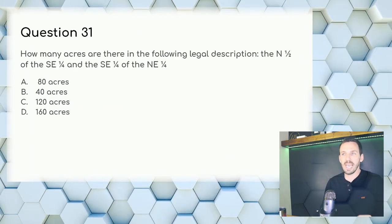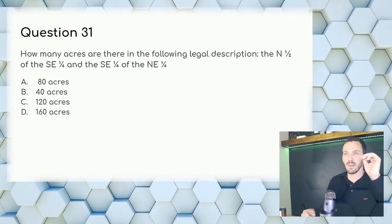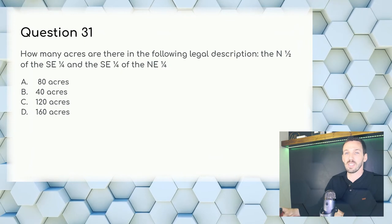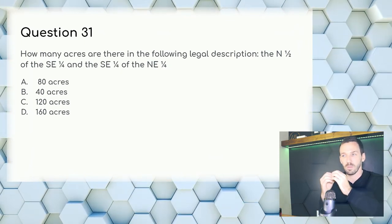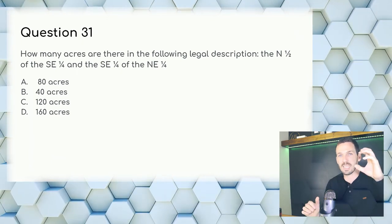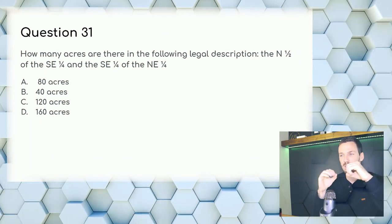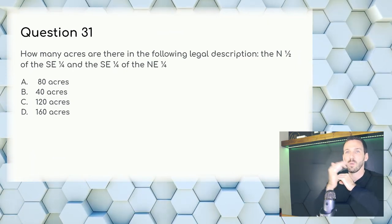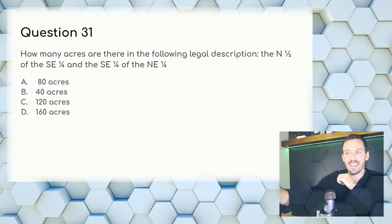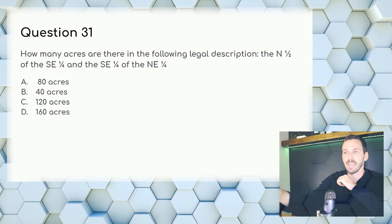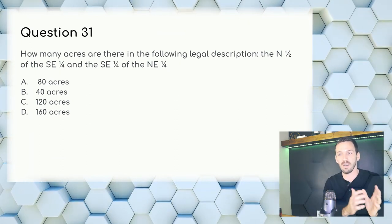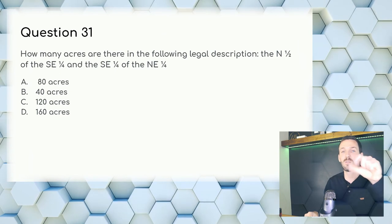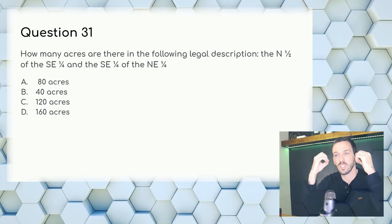Question 31: How many acres in the following legal description — the north half of the southeast quarter, and the southeast quarter of the northeast quarter? The southeast quarter is 640 ÷ 4 = 160 acres. The north half of 160 is 80. Then the northeast quarter of 640 is also 160, and a quarter of that is 40. Add 80 + 40 = 120 acres.